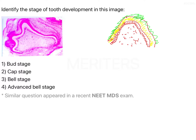Following this eosinophilic layer, you can see another layer of tall columnar cells which are a little darker. In this region you can also see something basophilic over here.